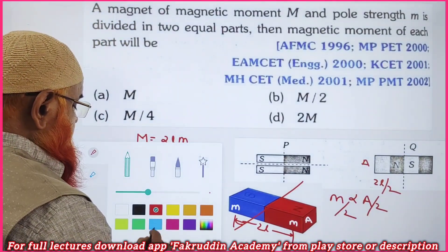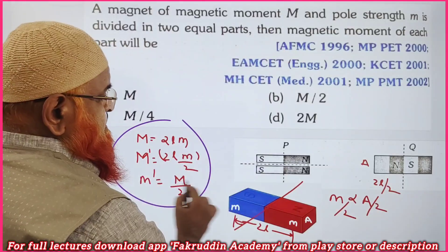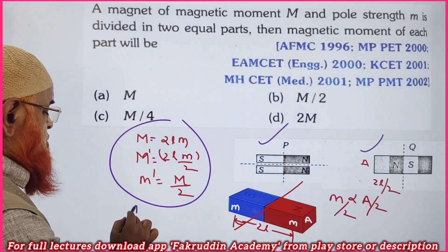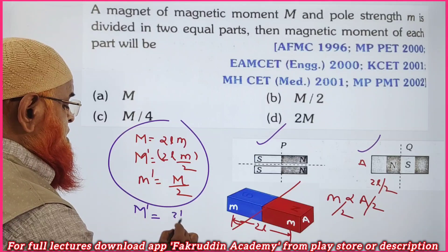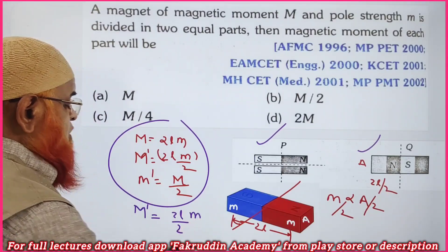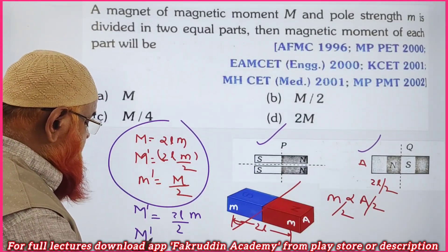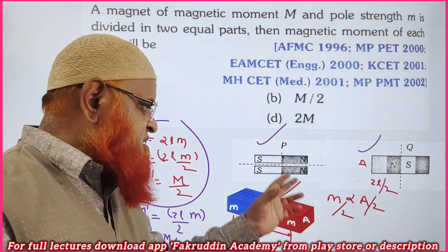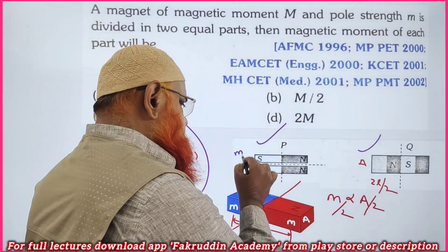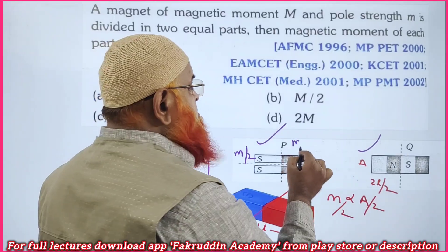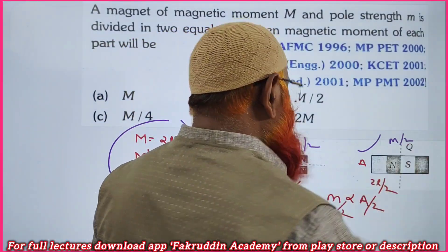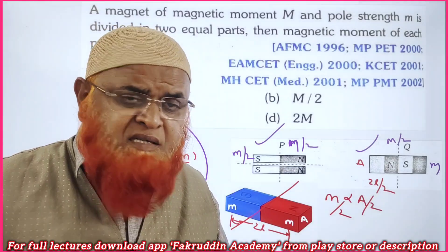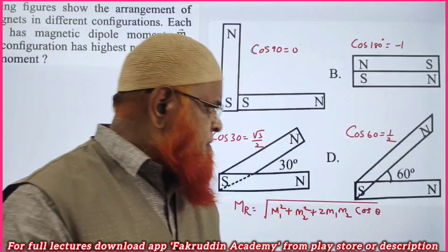In this second case, the new magnetic moment M' = (2l/2) × (pole strength), and the pole strength remains the same. So the new magnetic moment is the old magnetic moment divided by 2, which is M/2. In the first case pole strength halved giving M/2; in this case the length halved giving M/2 as well. Therefore magnetic moment becomes half in both cases.